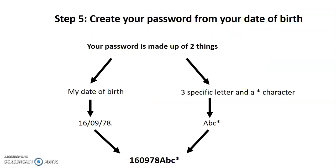Now we're going to create a password, and to create a password we're going to use your date of birth. In this example I'm using the date of birth of somebody born on the 16th of the 9th, 1978. You need to take the first six digits. It's important you drop the '19' at the beginning of the year — whether that's 1978, 1981, or 1995 — and also if the month is less than 10, you need to put a zero in front of it. The same is true for any day less than 10.